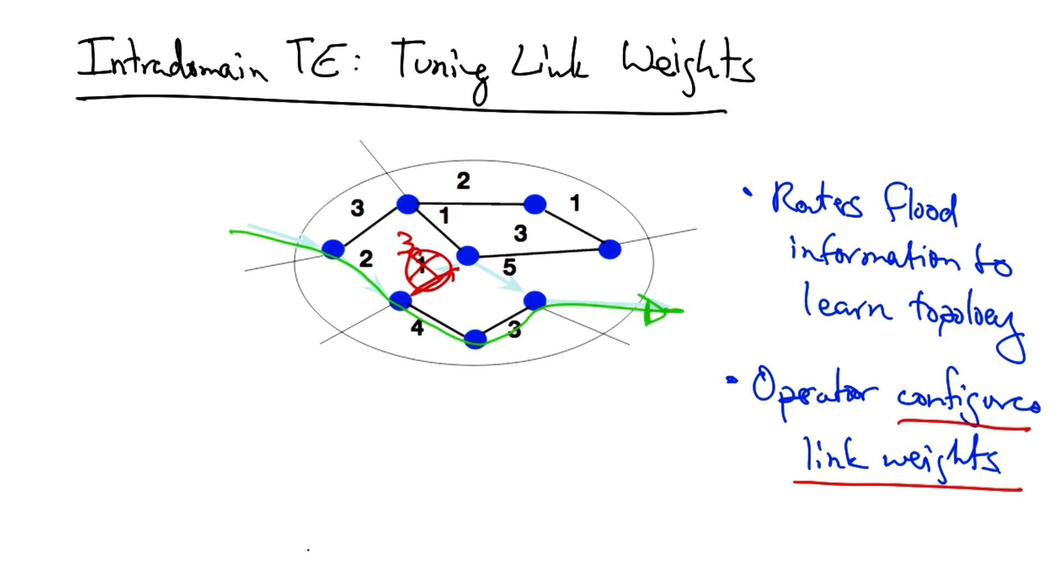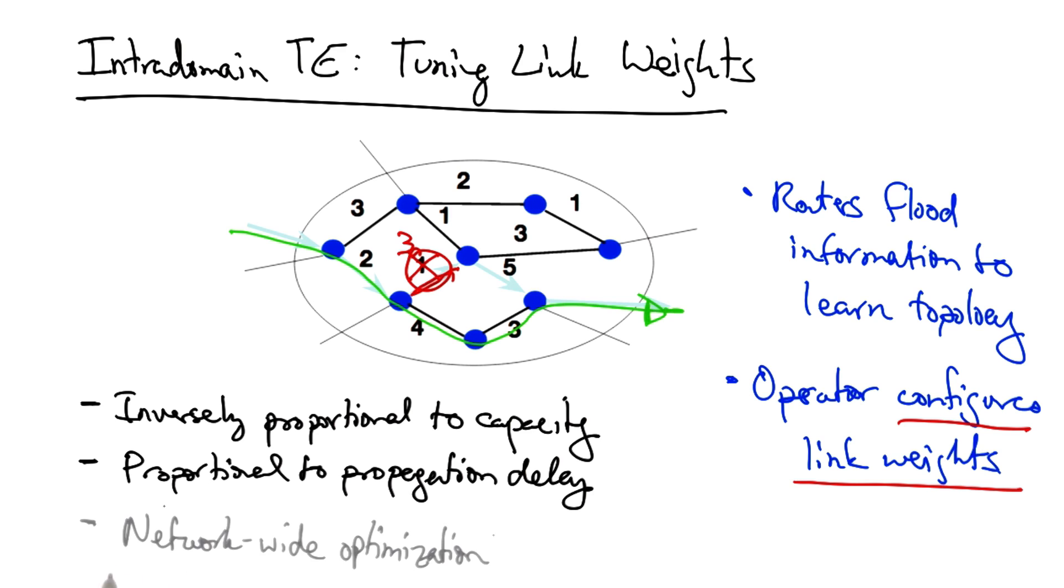In practice, network operators set these link weights in a variety of ways. One could set the link weights inversely proportional to capacity, proportional to propagation delay, or the operator might perform some network-wide optimization based on traffic.